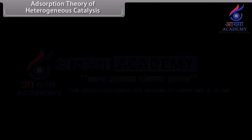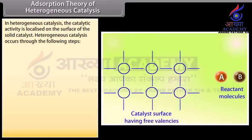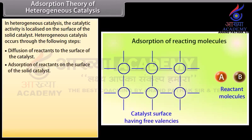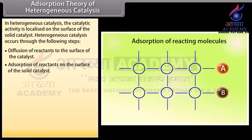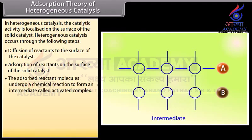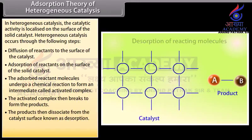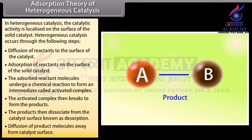Adsorption theory of heterogeneous catalysis. In heterogeneous catalysis, the catalytic activity is localized on the surface of the solid catalyst. Heterogeneous catalysis occurs through the following steps: diffusion of reactants to the surface of the catalyst; adsorption of reactants on the surface of the solid catalyst; the adsorbed reactant molecules undergo a chemical reaction to form an intermediate called activated complex; the activated complex then breaks to form the products; the products then dissociate from the catalyst surface (desorption); and finally, diffusion of product molecules away from the catalyst surface.